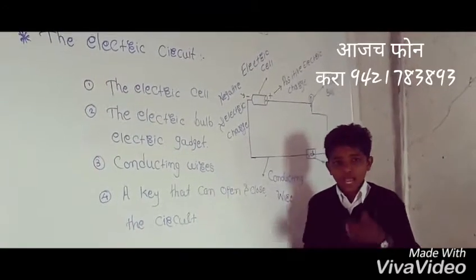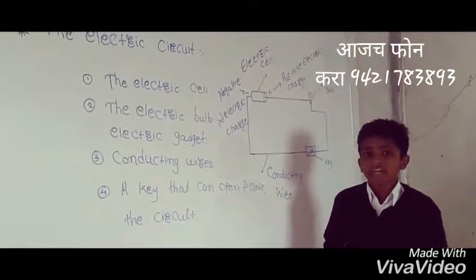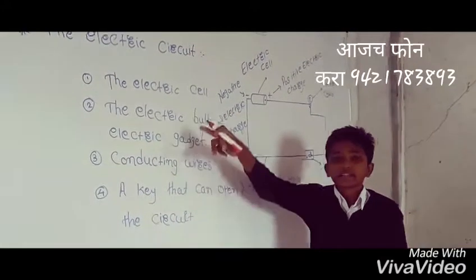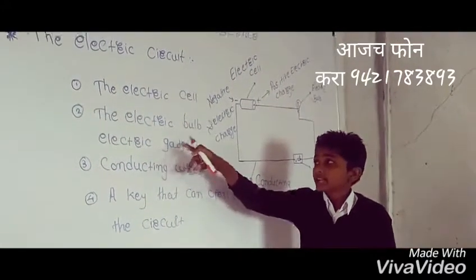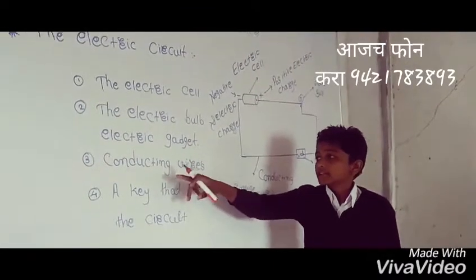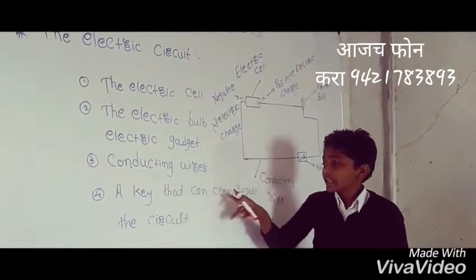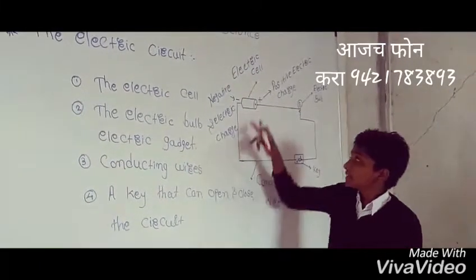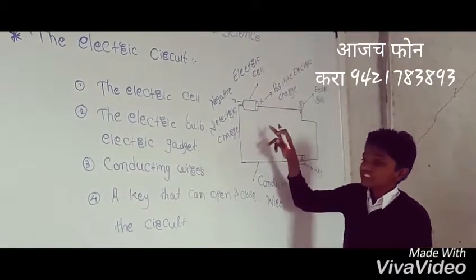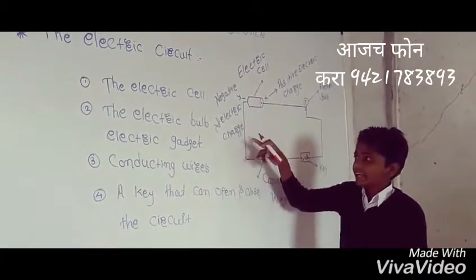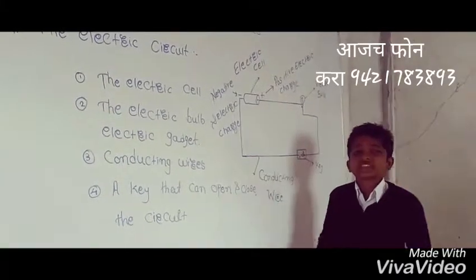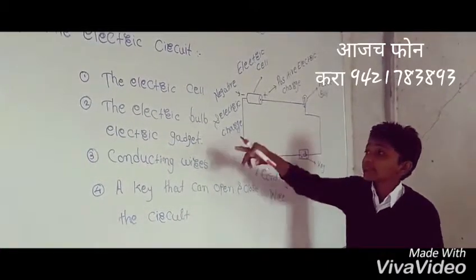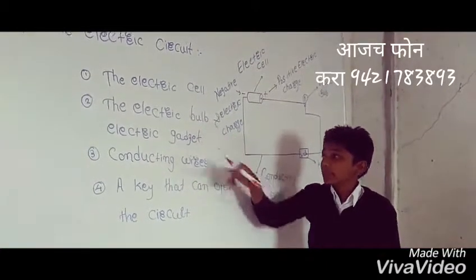Hi friends, I am the teacher from Elect Standard. Today we are learning about electric circuits. There are key points in an electric circuit: the electric cell, the electric bulb, the conducting wire, and the key that can open and close the circuit. First, we learn the electric cell. The electric cell has positive electric charges and negative electric charges. When these two charges come together, they form electricity.